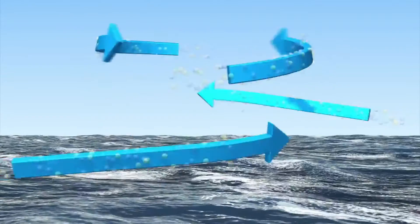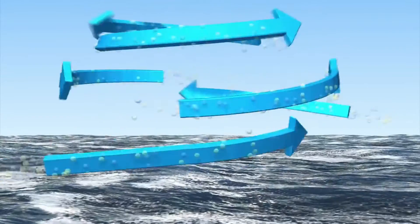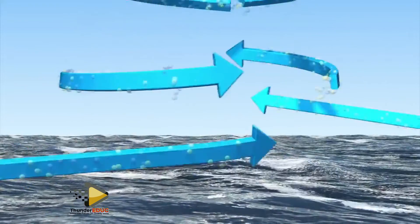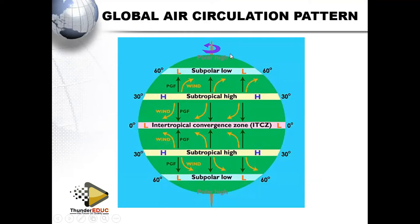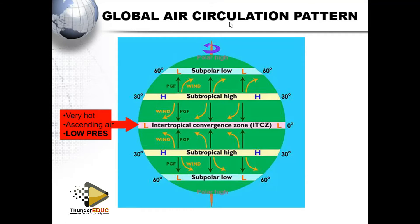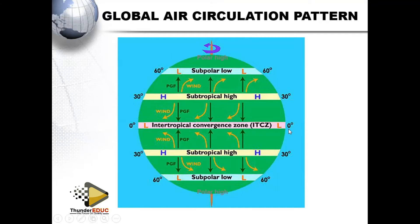Let's look at the global air circulation patterns. When you look at this global air circulation, it is showing us the pattern of how air moves. Here we have what you call the ITCZ, which is at the equator, level zero degrees.